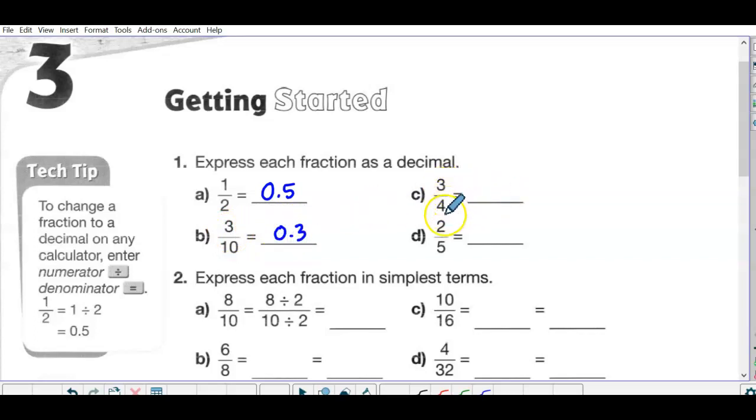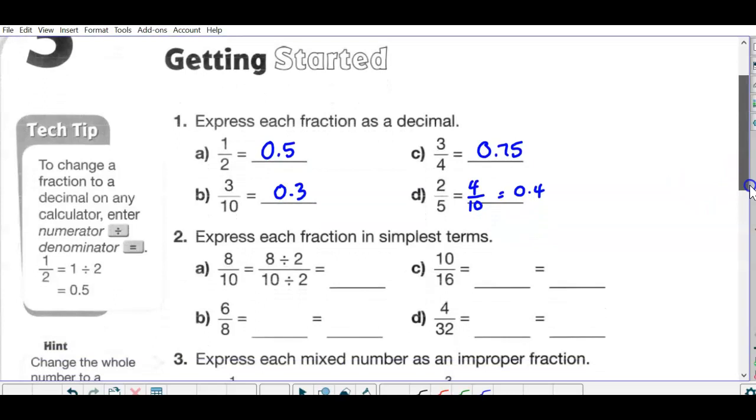Three fourths, think of three quarters in words, in money, is 3 times 25 cents. Each quarter is worth 25 cents, so that would be 75 cents, which is 0.75. And then two fifths, maybe you're not sure about that. If you think about expressing that with a denominator of 10, you would multiply it both by 2. Four tenths, just like 3 tenths was 0.3, four tenths would be 0.4. But you can use your calculator if you need to.